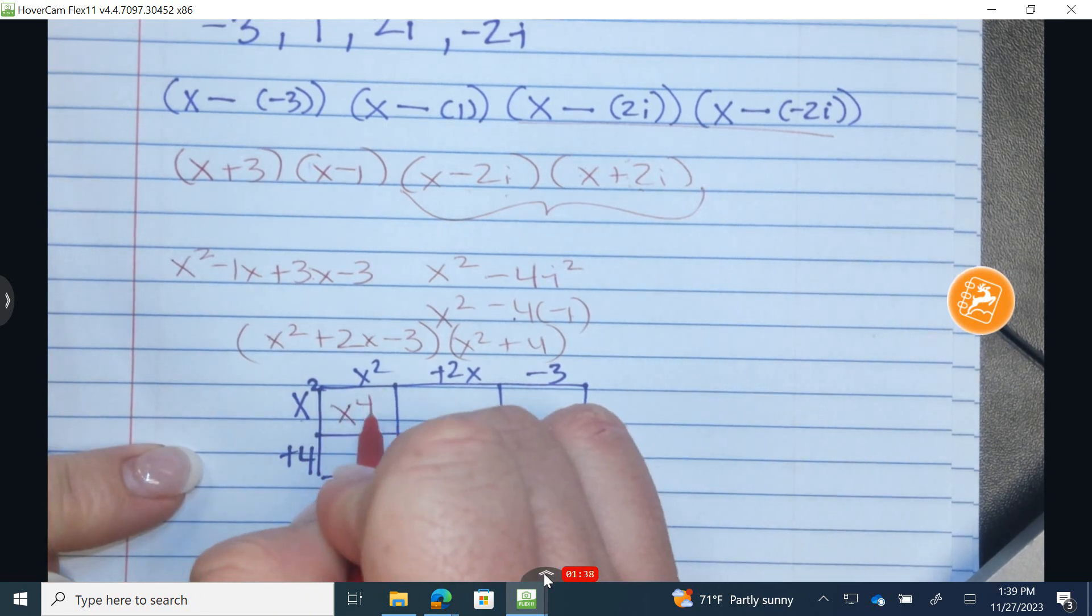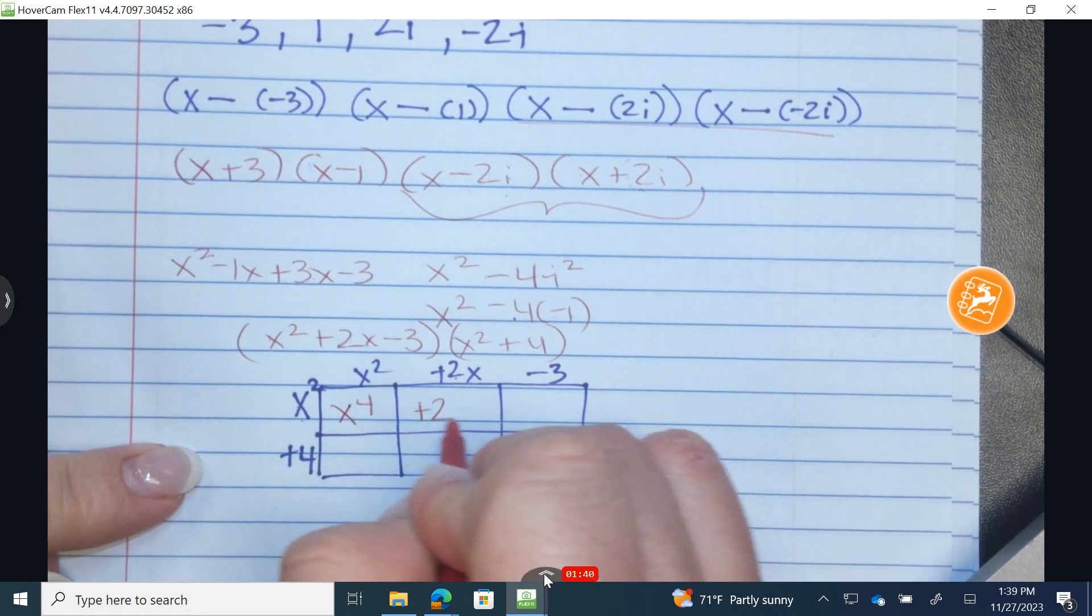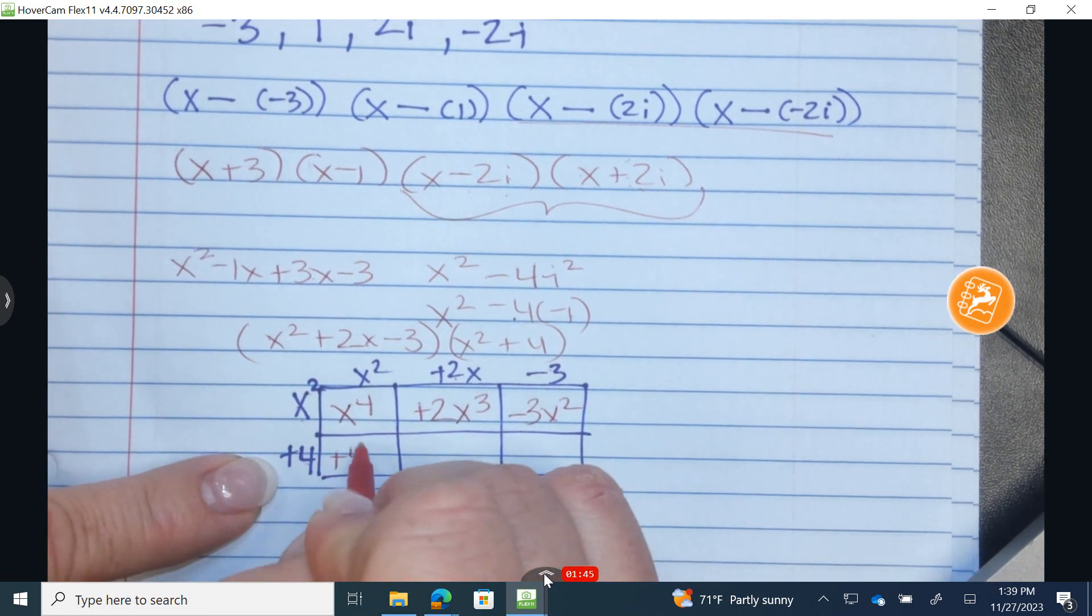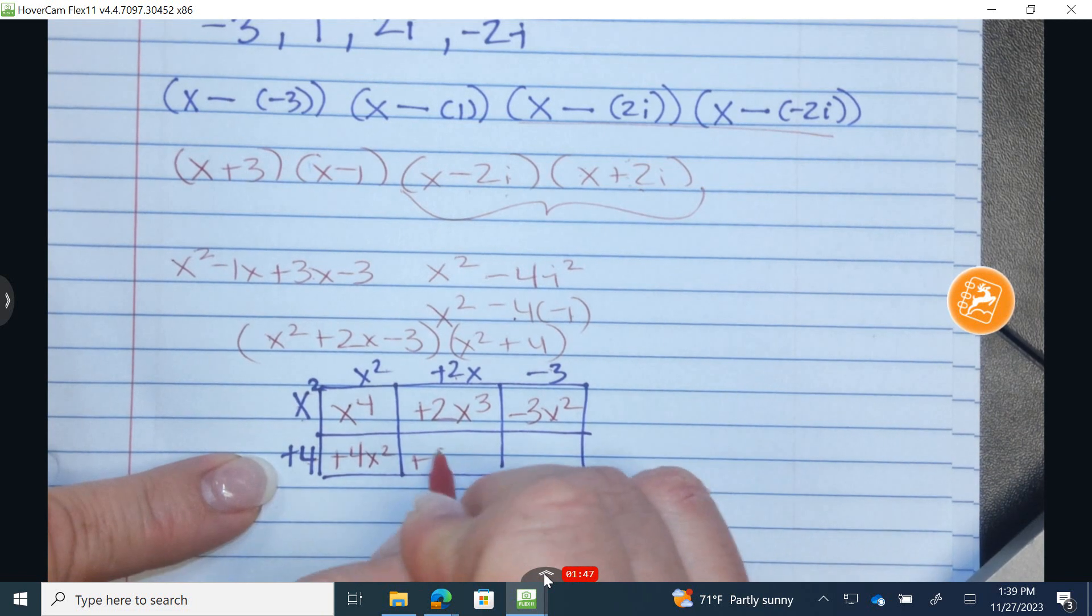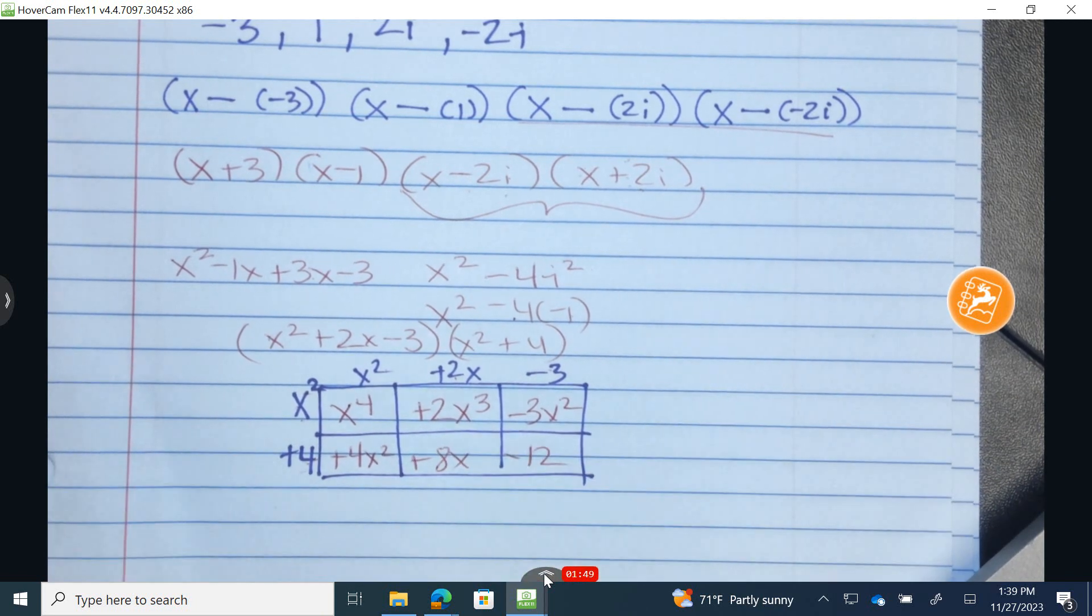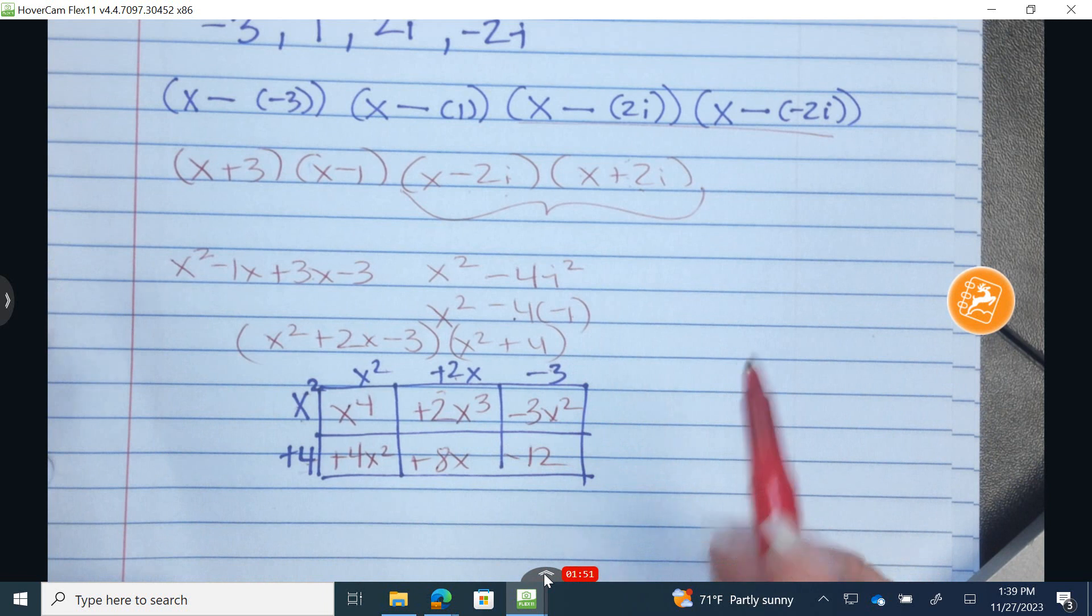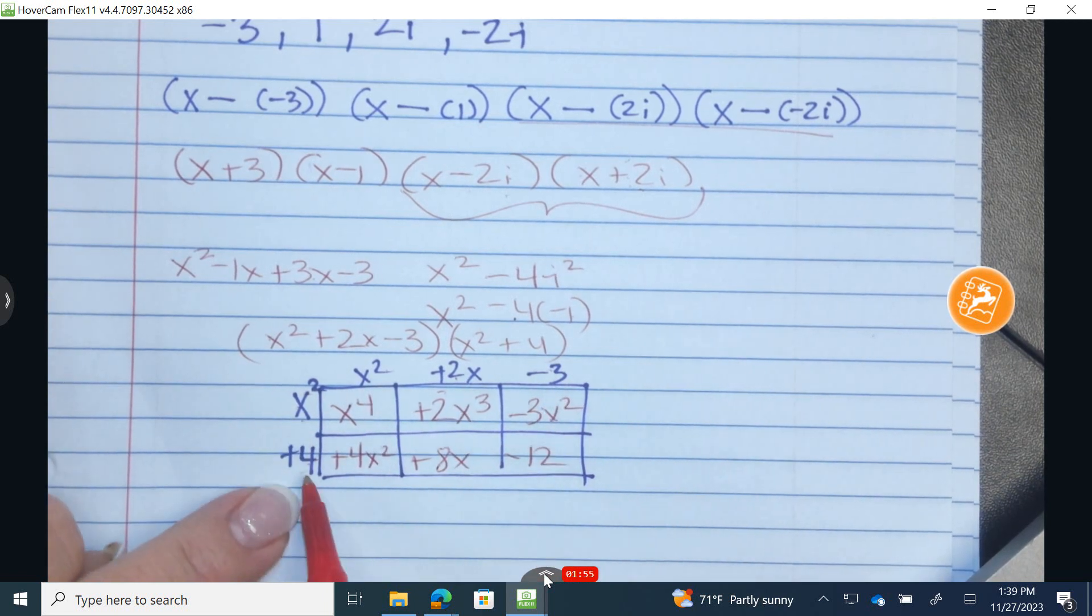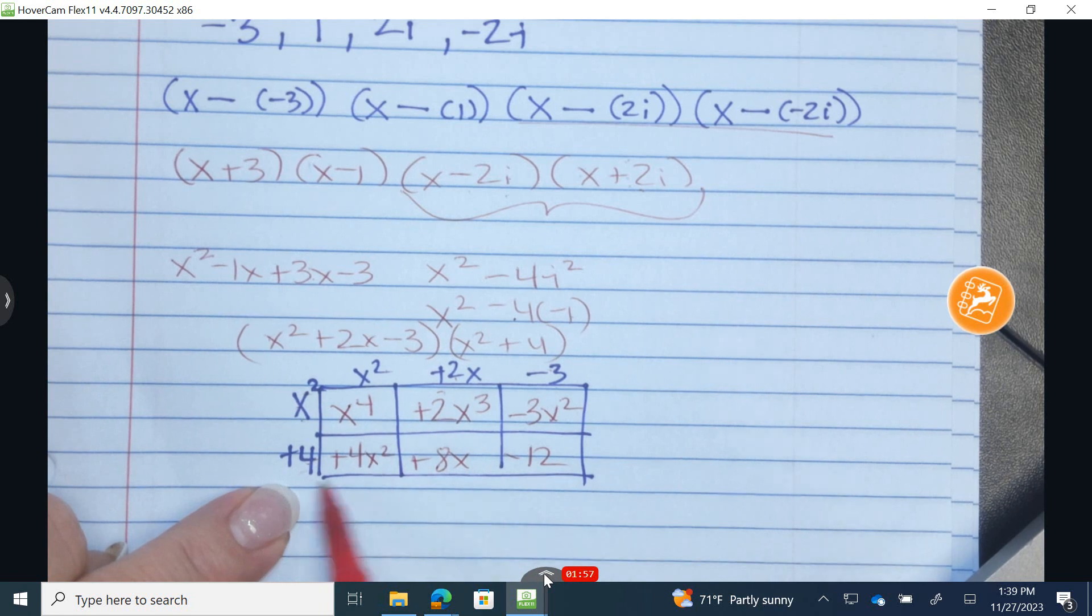Multiply to get x to the fourth. Multiply positive 2x cubed. Multiply negative 3x squared. Multiply positive 4x squared. Positive 8x and negative 12. Now when we go ahead with this, I'm checking that I did the calculations correctly. That looks right, looks good.